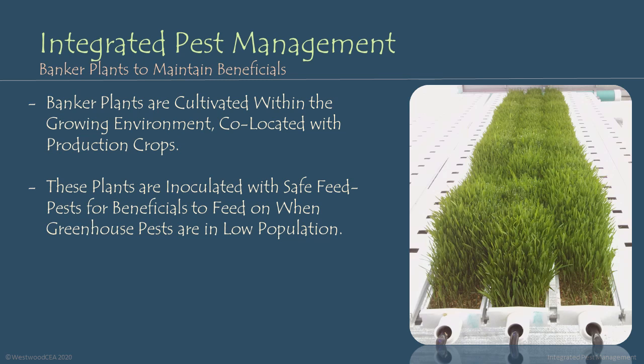Grasses are a monocot plant, and there are aphids that only feed on grasses and won't move on to my lettuce crops. So I can cultivate these monocot grass aphids on these ryegrass plants, and my aphidious wasps will hang out around the ryegrass, feed on those aphids, reproduce on them, and I'll be able to maintain a stable population of aphidious wasps among my growing crops.